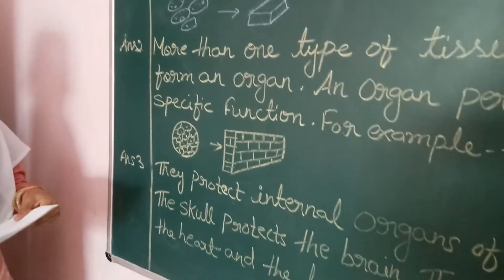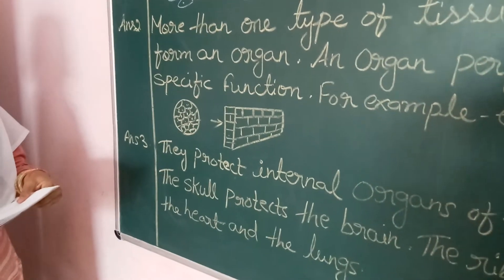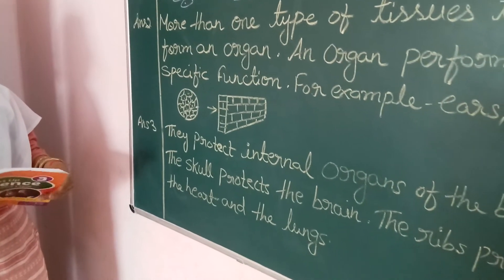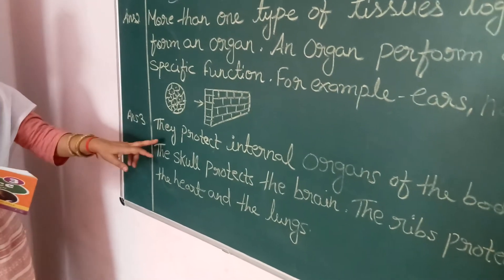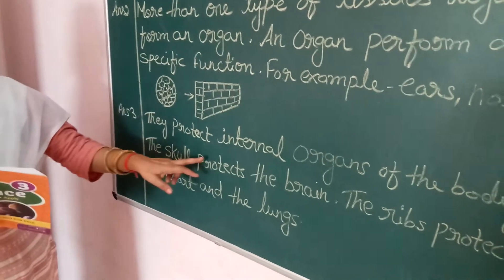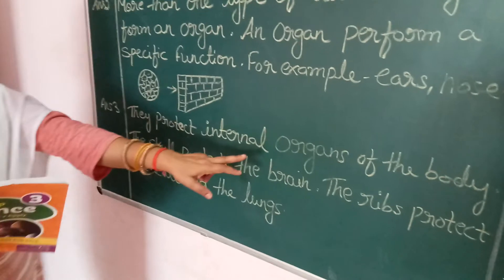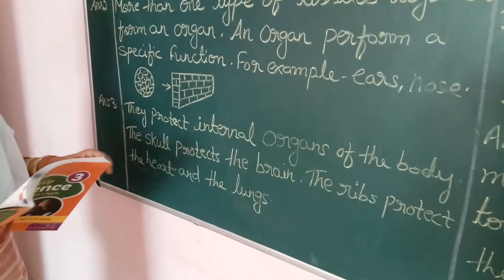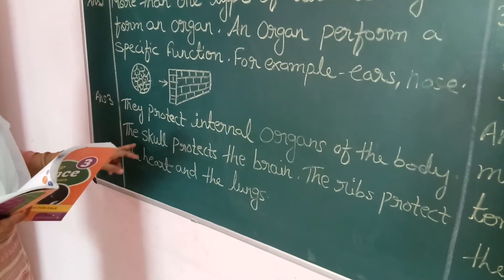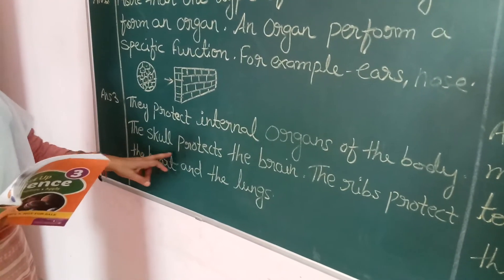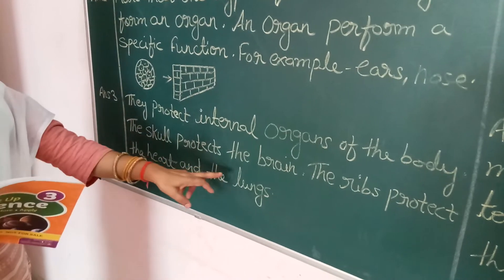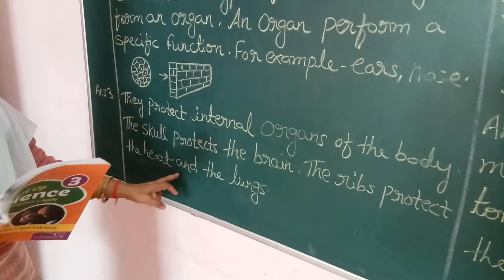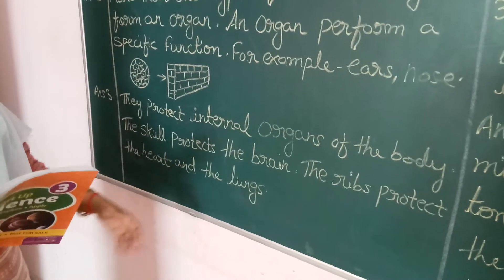Question number 3: What is the function of the skeletal system? The skeletal system is the framework of the body. They protect internal organs. The skull protects the brain. The ribs protect the heart and the lungs.